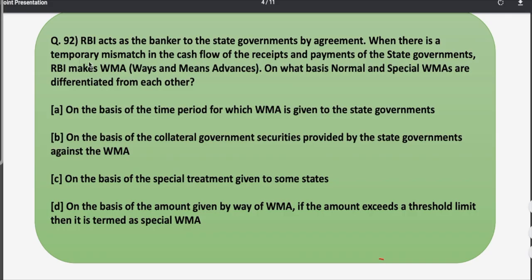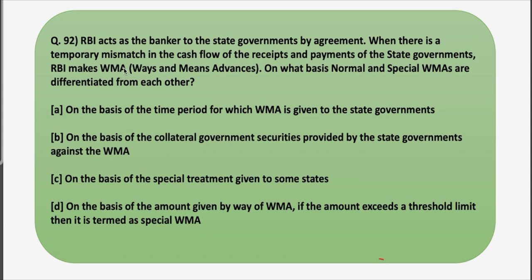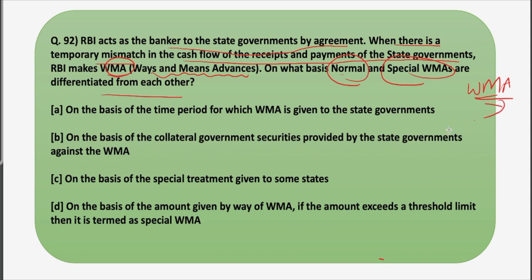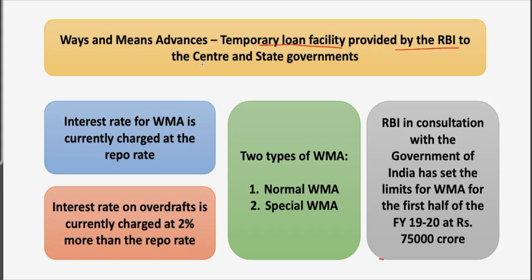Moving on to the next question, which is really interesting and relates to Ways and Means Advances. RBI acts as the banker to state governments by agreement. When there is a temporary mismatch in the cash flow of the receipts and payments of state governments, RBI makes WMA, that is Ways and Means Advances. This is a temporary loan facility provided by RBI to the center and state governments, introduced in 1997 after putting an end to the four-decade-old system of ad hoc treasury bills to finance the central government deficit.